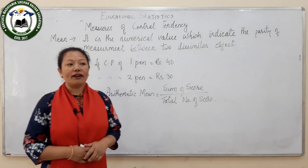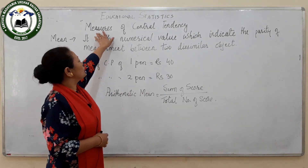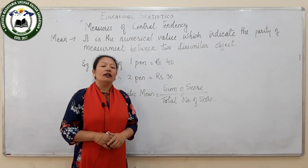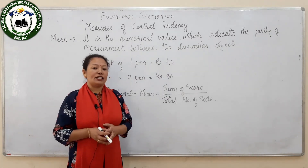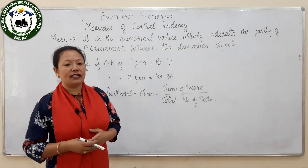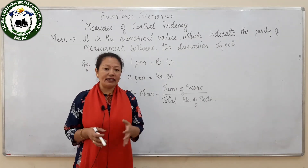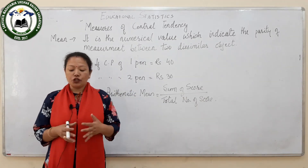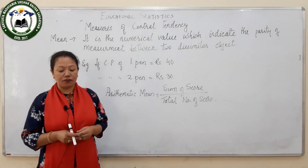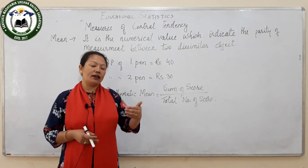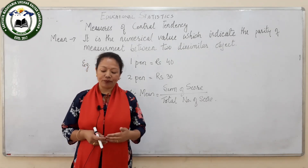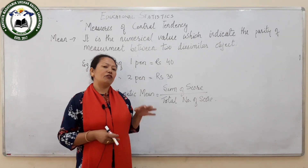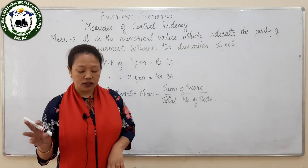In our last class we have done educational statistics, but today we are doing measures of central tendency. In our last class we collected data and tabulated data, but those data which are collected need to be analyzed. The data obtained on educational achievement of the individual has to be arranged or analyzed. There are different techniques which we follow in statistics, from very simple to complex ones.